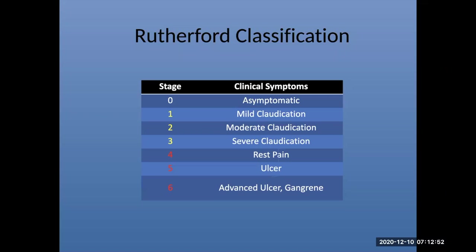If a patient is asymptomatic they're Rutherford zero, and you're probably not going to see those patients anyway. Rutherford 1, 2, and 3 represent differing degrees of claudication. When you get to Rutherford class 4, 5, and 6, that is CLI — critical limb ischemia or chronic limb-threatening ischemia, depending on which guidelines you're reading. Remember, there are objective hemodynamic parameters you can use to determine which category a patient fits in.